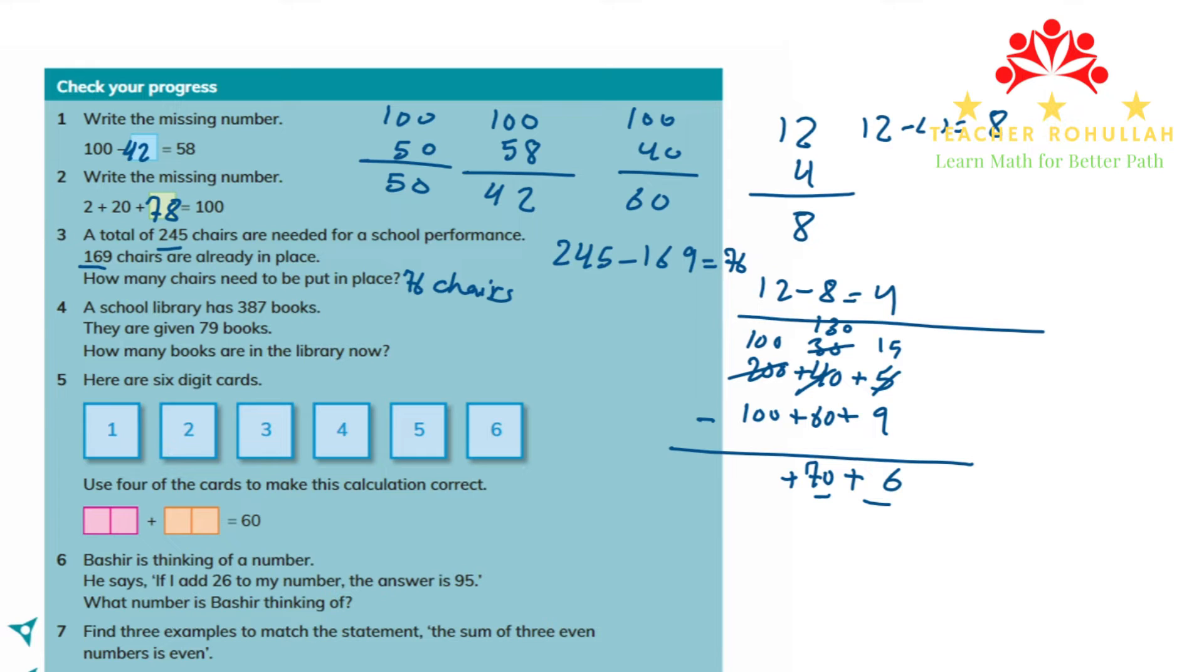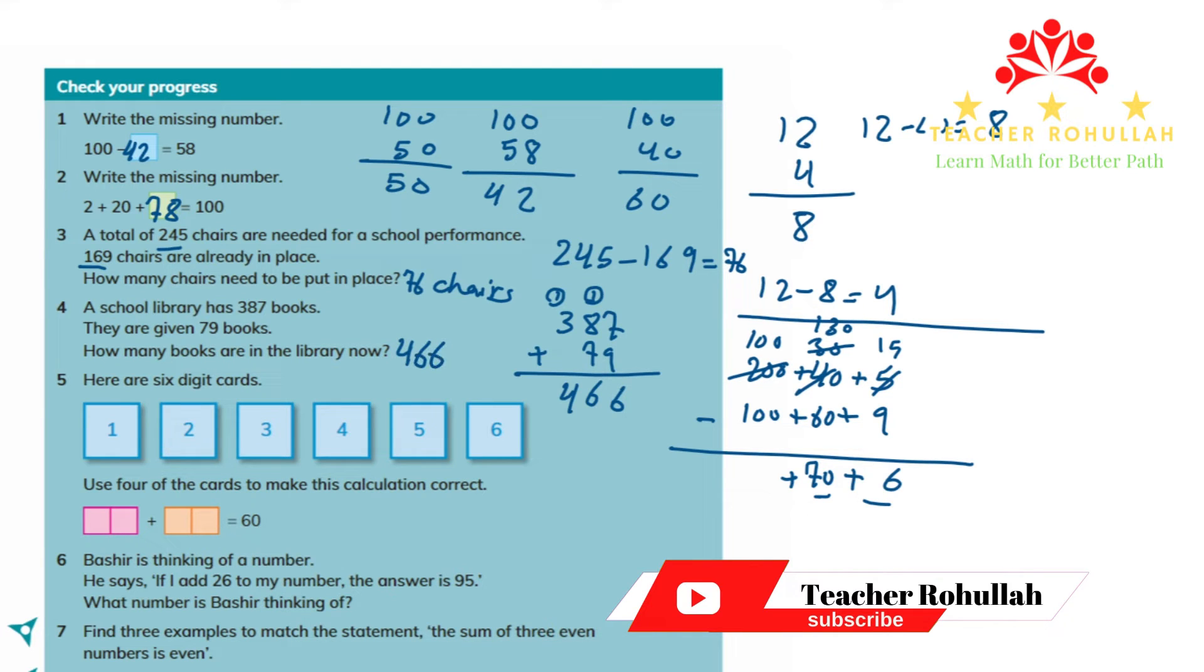In question 4, a school library has 387 books. They are given 79 books. How many books are there in the library now? Here we are asked to find the total. So we can write 387 plus 79 will be equal to a number that gives the total number of books in the library. 7 plus 9 is equal to 16. We write 6 here and carry 1 above the tens place. 8 plus 7 is 15, 15 plus 1 is 16. Again, 1 we carry above the hundreds place, and 1 plus 3 is equal to 4. So now there are 466 books in the library. We are done with question 4.